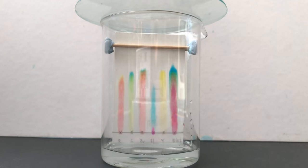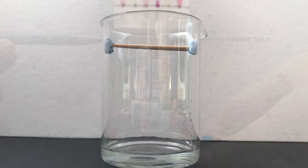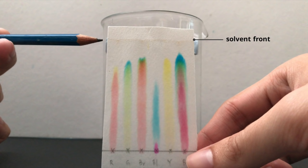Here, we see the solvent front moving upwards. When the solvent front has reached near the top, we then remove the chromatogram and mark the solvent front with a pencil line.